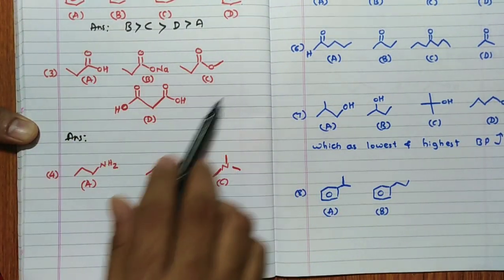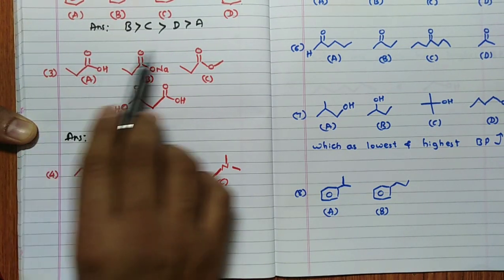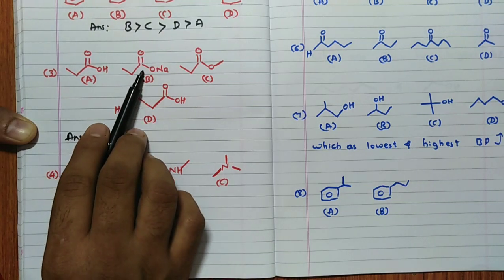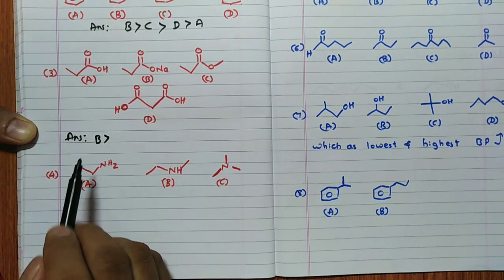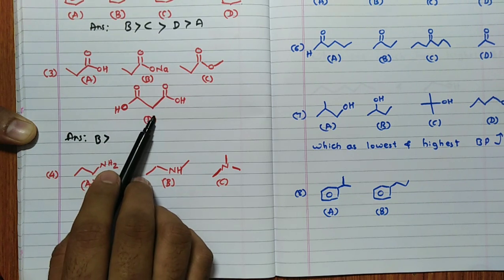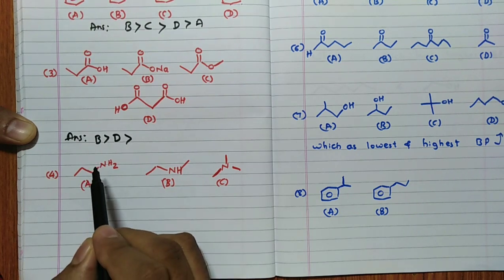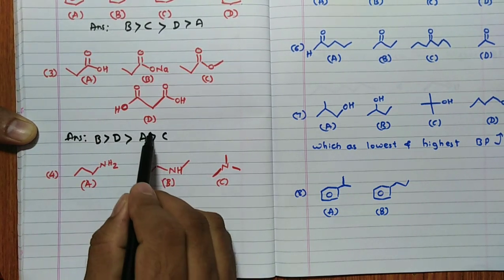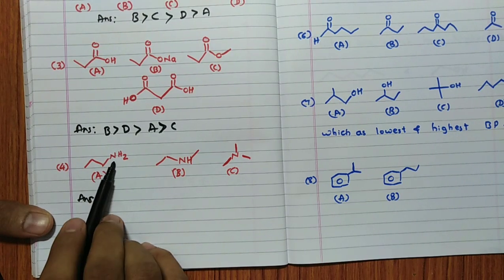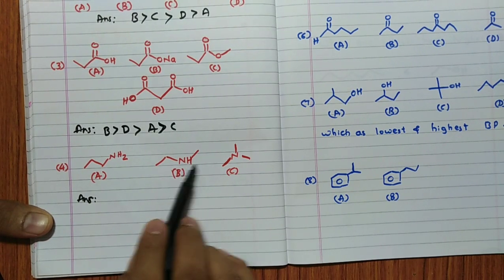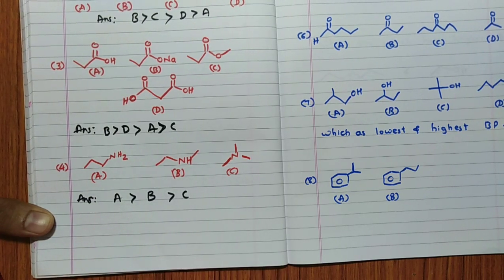Problem 3: Different compounds are given. One has ionic forces so it has the highest boiling point (B). Among the remaining, compound D is larger and has two OH groups, giving more hydrogen bonding, then A with one OH, then C. For Problem 4 with three compounds having NH groups: compound A has two hydrogens, B has one, and C has none, so the order is A > B > C.